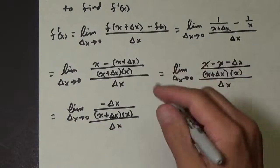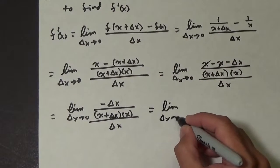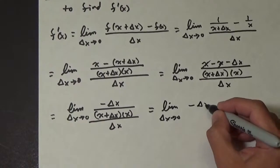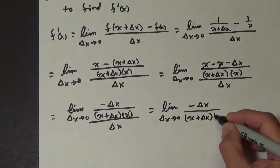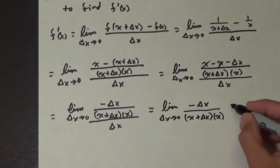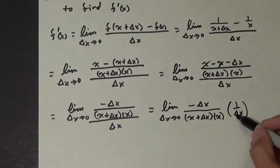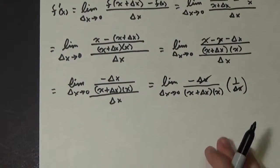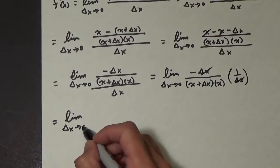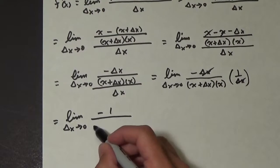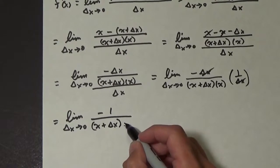This is going to be multiplied by one over delta x, and then these delta x's cancel out. So we end up with the limit as delta x approaches zero of negative one, all over x plus delta x times x.